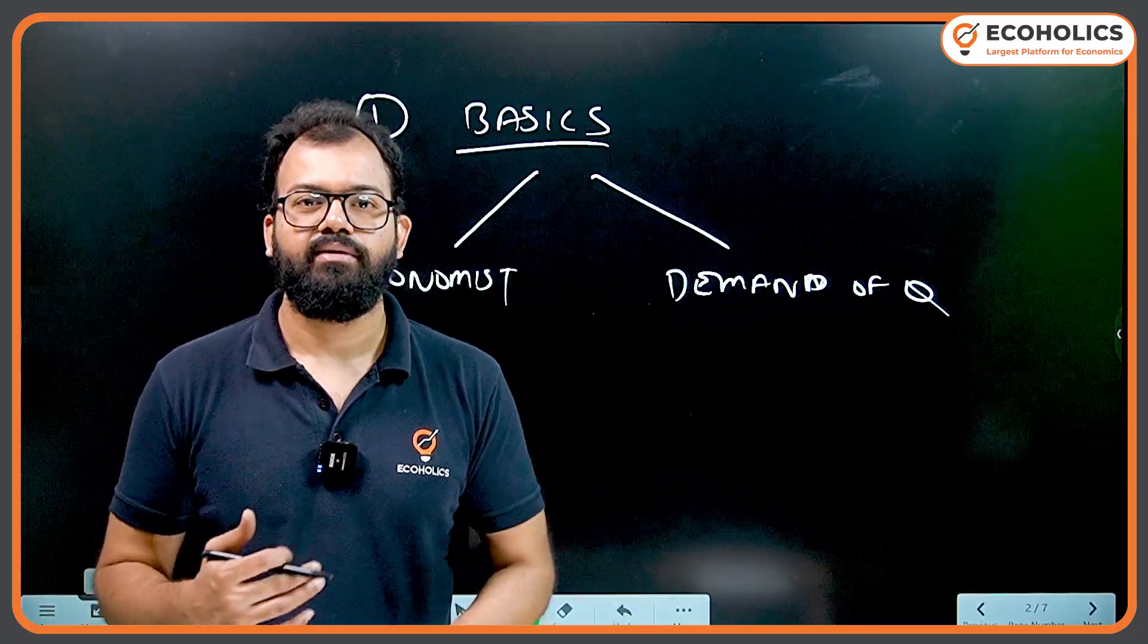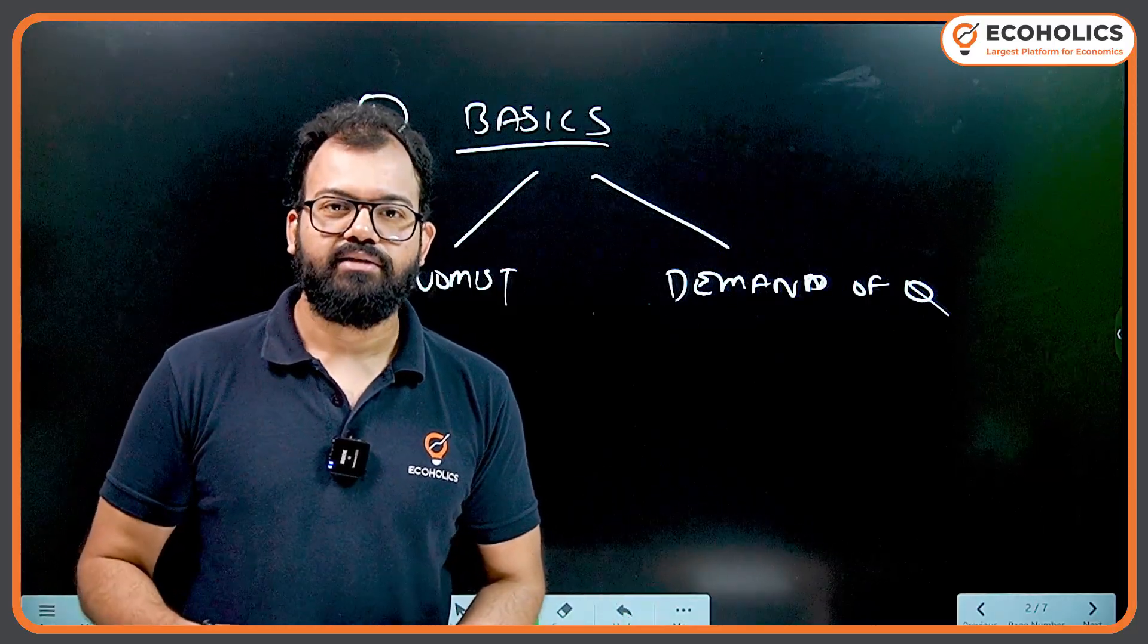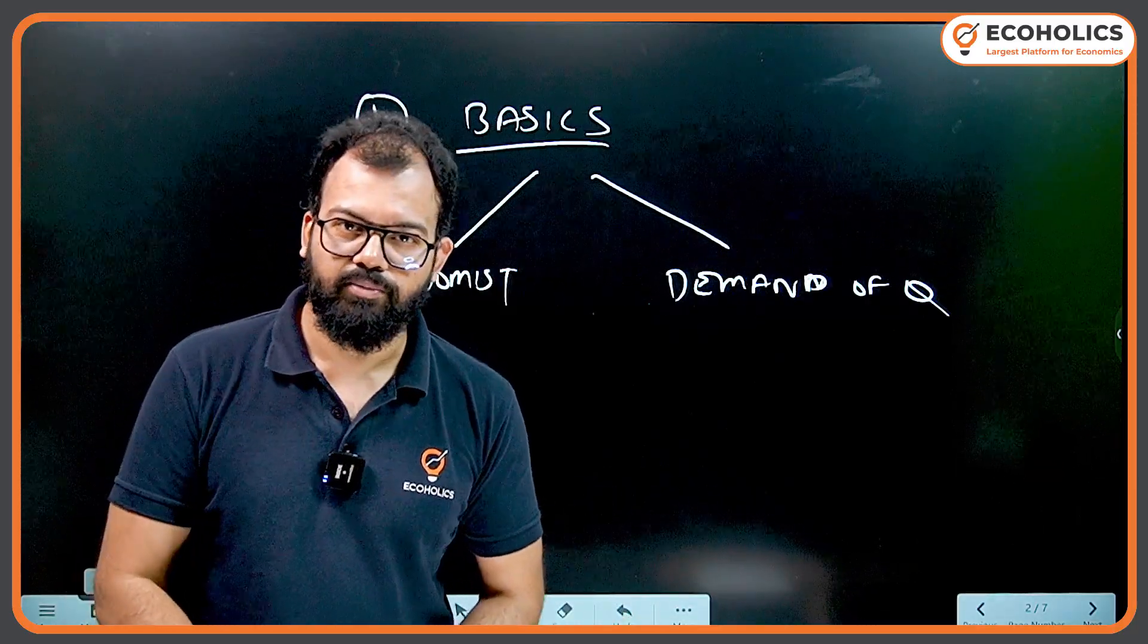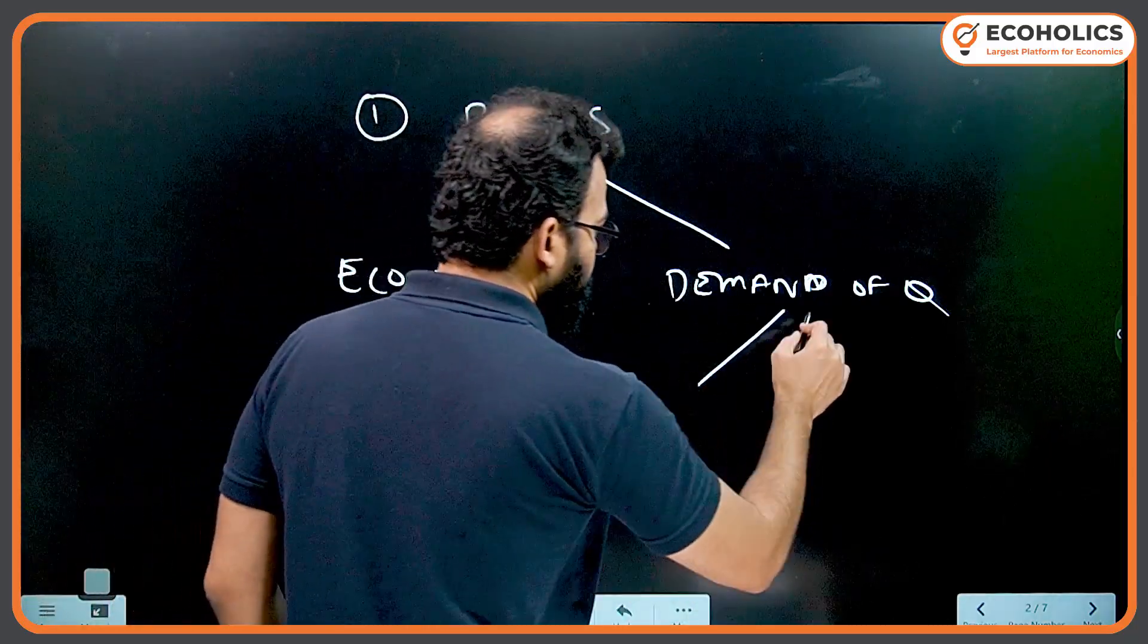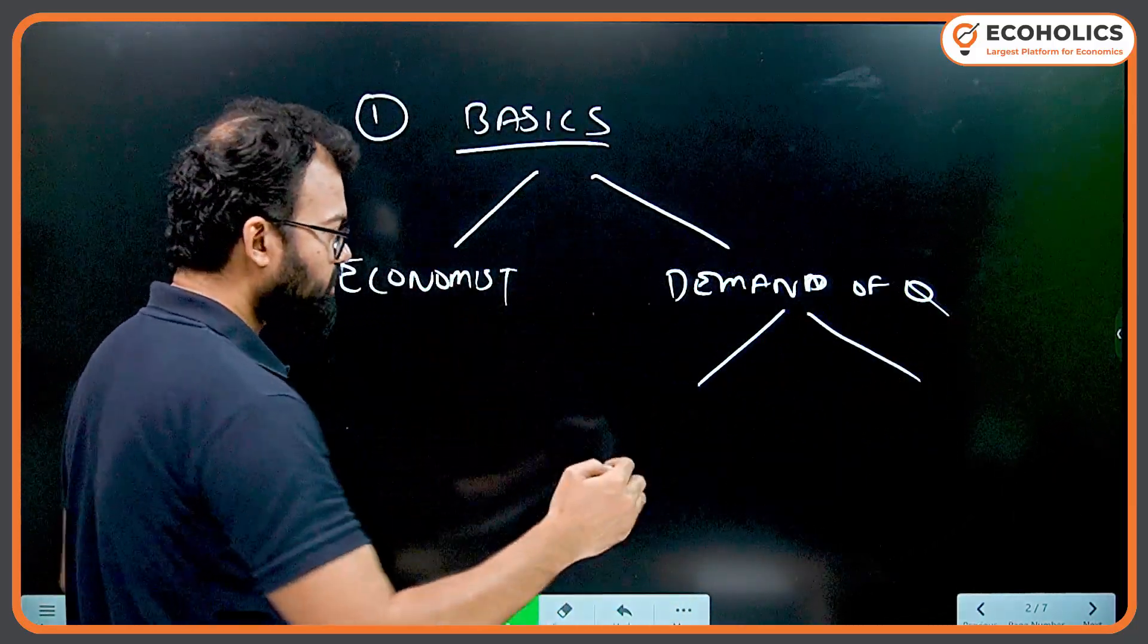If they're asking salient features and you're writing merits and demerits, or not coming directly to the point, that creates a problem. Under demand of the question, two things are important: content and context.